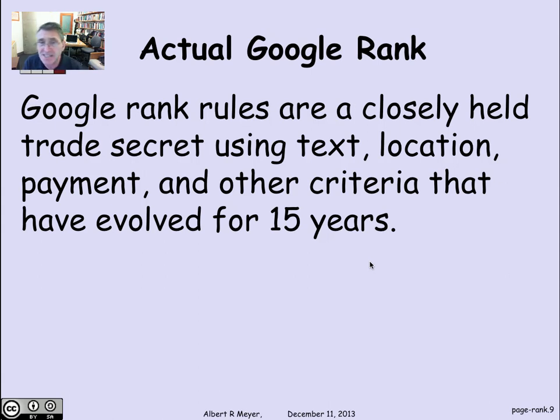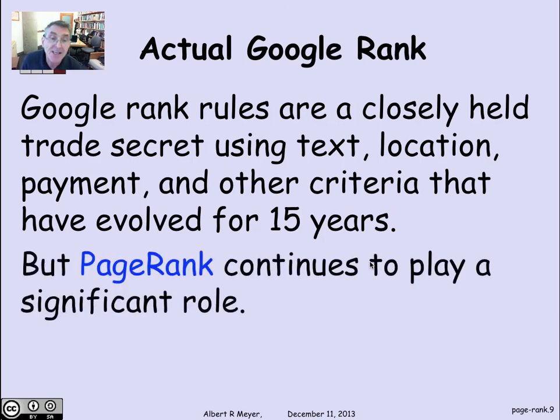The actual rank rules are a closely held trade secret. By Google, they use text, they use location, they use payments, because advertisers can pay to have their search results listed more prominently, and lots of other criteria that have evolved over 15 years. And they continue to evolve as people find ways to manipulate the ranking. Google revises its ranking criteria and algorithms. But nevertheless, page rank continues to play a significant role in the whole story.